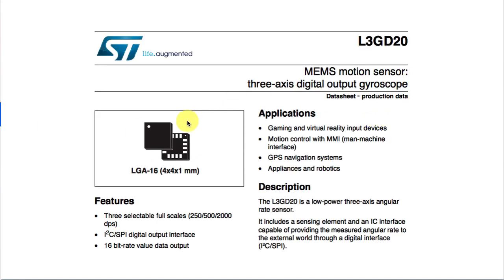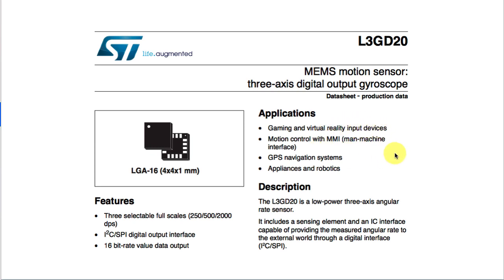Here's an example of a companion device to the accelerometer — same kind of footprint, but it allows you to detect rotation rates in degrees per second. Also an I2C output, also 16-bit data. When you combine this with an accelerometer, you get considerably more information, almost enough to have an inertial measurement unit that will tell you which direction your aircraft is flying and how it's moving over time.